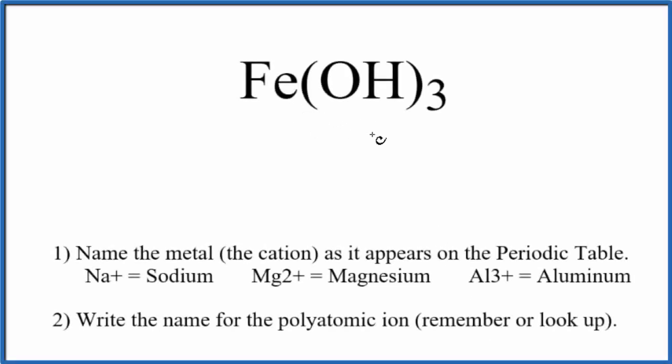To write the name for Fe(OH)₃, the first thing we need to recognize is this OH here. When it's bonded to a metal, this is called the hydroxide ion.